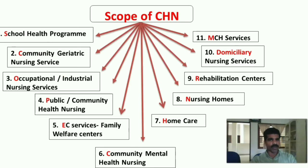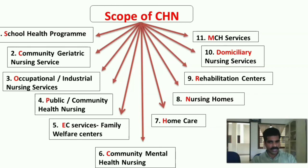The scope of community health nursing includes school health program, community geriatric nursing service, occupational or industrial nursing services, public health or community health nursing, eligible couple services through family welfare centers, community mental health nursing, home care, nursing homes, rehabilitation centers, domiciliary nursing services, and MCH services.